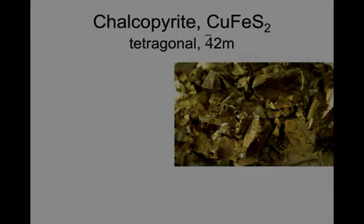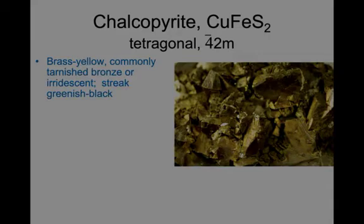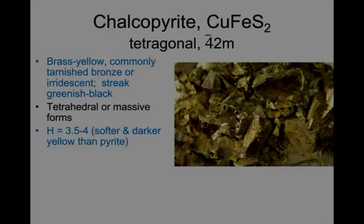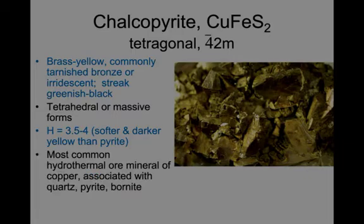Chalcopyrite is the next sulfide. It's brass yellow, and commonly tarnishes bronze to iridescent blues and purples. The streak is greenish-black, which is quite characteristic. It forms tetragonal, or more commonly, massive forms. Hardness is 3.5 to 4, softer and darker yellow than pyrite, for example. It's the most common hydrothermal ore mineral of copper, associated with quartz, pyrite, and bornite.